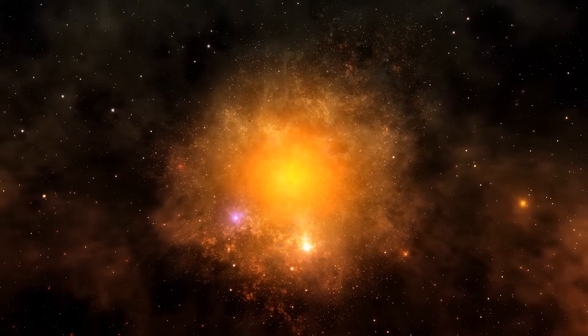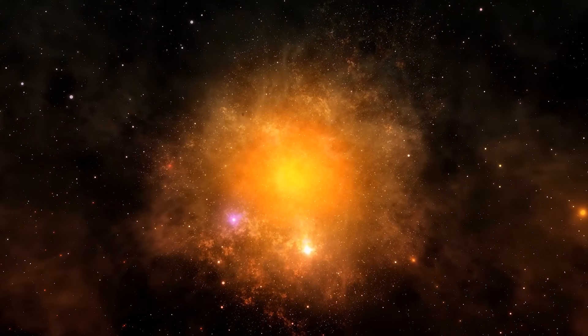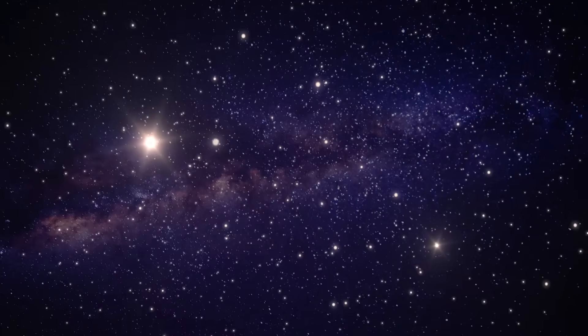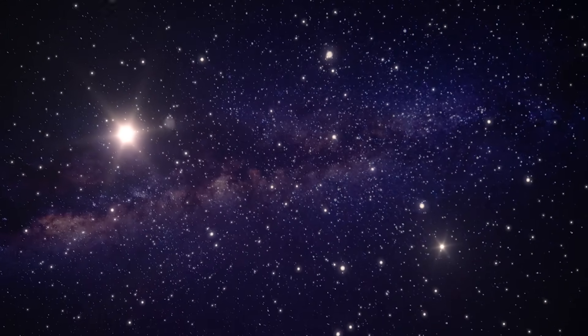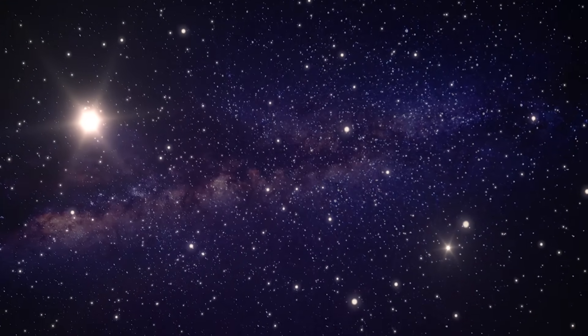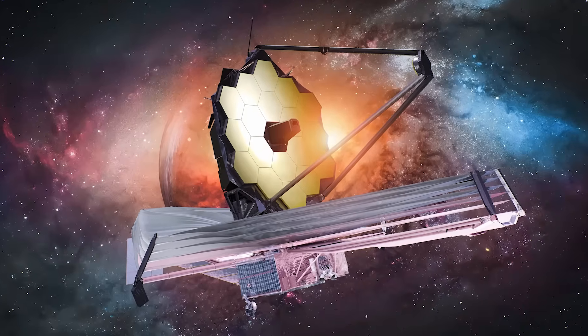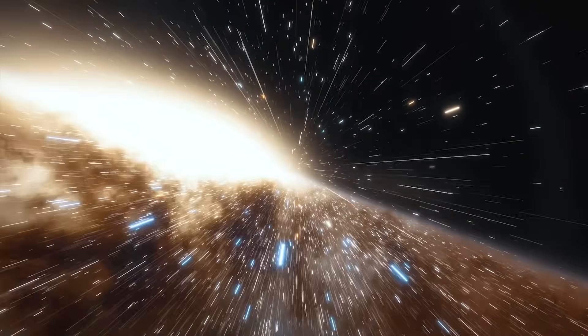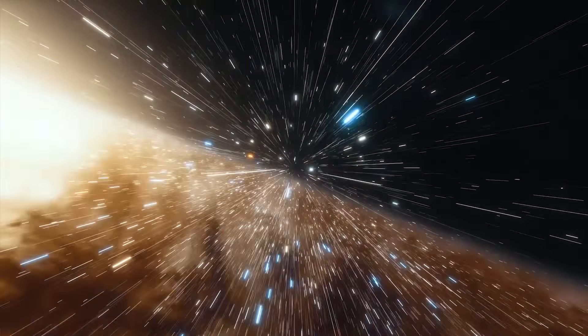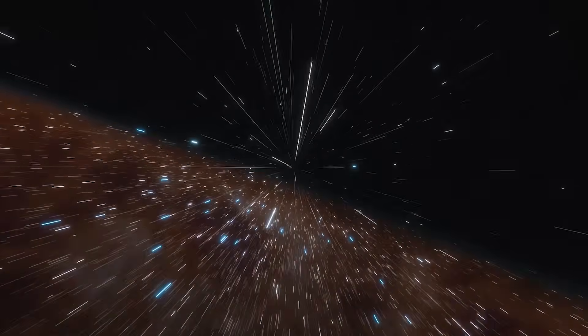This cosmic infrared background may represent the integrated light of the very first stars, Population 3 stars, whose existence has long been theorized but never directly confirmed. These stars, made almost entirely of hydrogen and helium, would have been enormous, short-lived, and incredibly luminous. If what Webb saw is indeed their combined signature, then we are finally catching a glimpse of the first lights to pierce the cosmic darkness after the Big Bang.